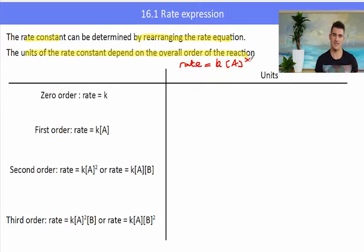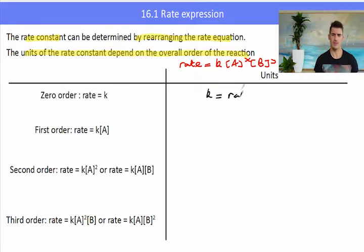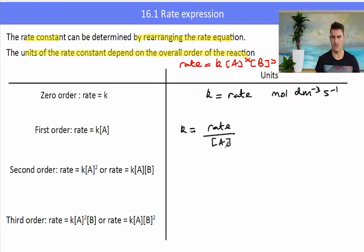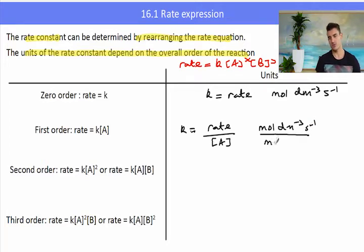The units of the rate constant depend upon the overall order of the reaction. For a zero order reaction, where rate equals k, the units of k are the same as the units for rate: mole per decimetre cubed per second. For a first order reaction, where rate equals k times the concentration of A, the units for k are rate over concentration — mole per decimetre cubed per second divided by mole per decimetre cubed — so we cancel the mole per decimetre cubed, leaving k with units of s⁻¹.